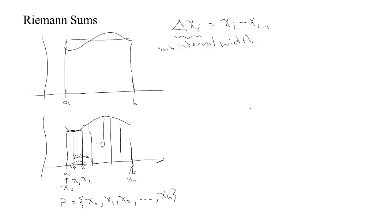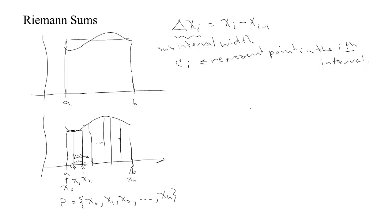The next thing we'll do is choose a representative point in each interval. c_i would be the representative point in the i-th interval, so c1 is the representative point in the first interval, c2 in the second interval, and so on. Once we've chosen a representative point within that interval, we'll plug it into the function — let's say our function's name is f — to get a height for that slice. Then we take the height of the i-th slice times the width of the i-th slice.